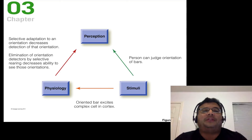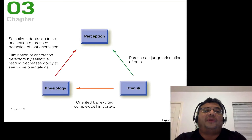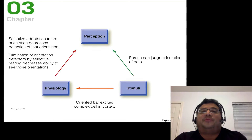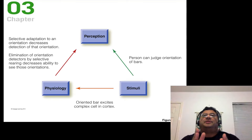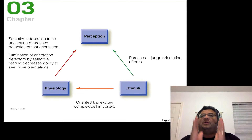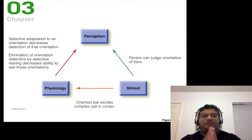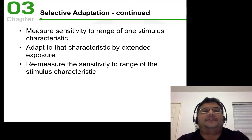You can also eliminate orientation detectors by selective rearing. For example, if you were raised in an environment that had nothing but vertical bars, that would disrupt your ability to detect those vertical bars.